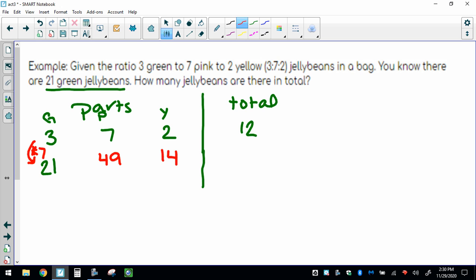12 times 7 gives us 84. So now when it asks us how many jelly beans are there in total, it's going to be 84.